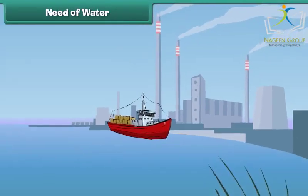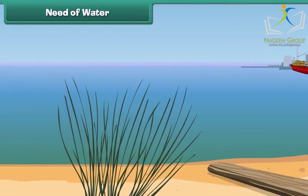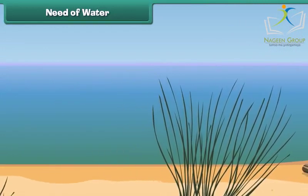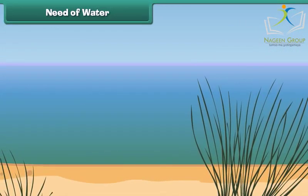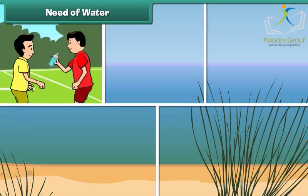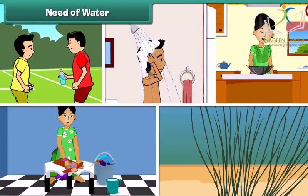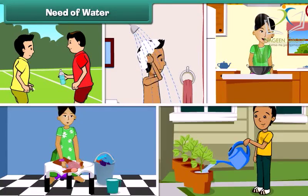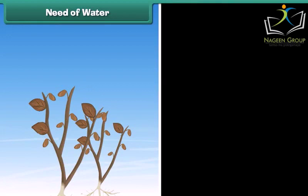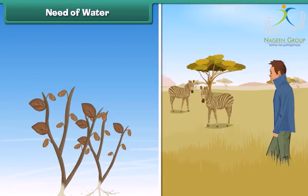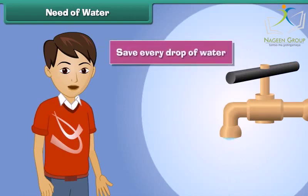We know air is very essential for our life, but did you ever wonder why water was so important? We need water to drink, to bathe, to cook, to wash our clothes, to water plants, and for so many other reasons. Without water the plants would die and people and animals would go thirsty. So children, save every drop of water and don't let it go to waste.